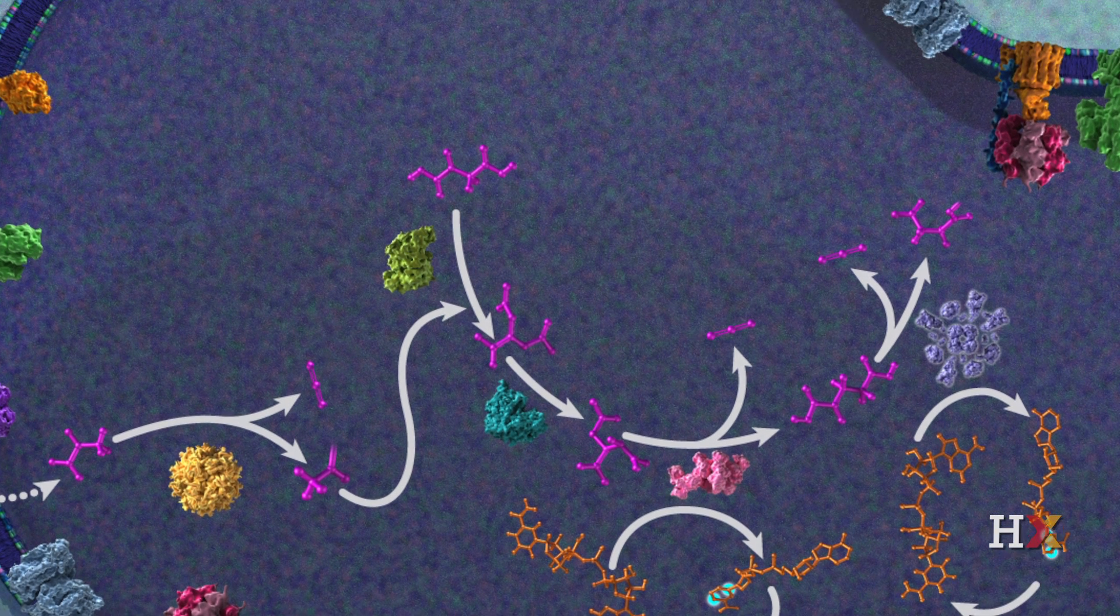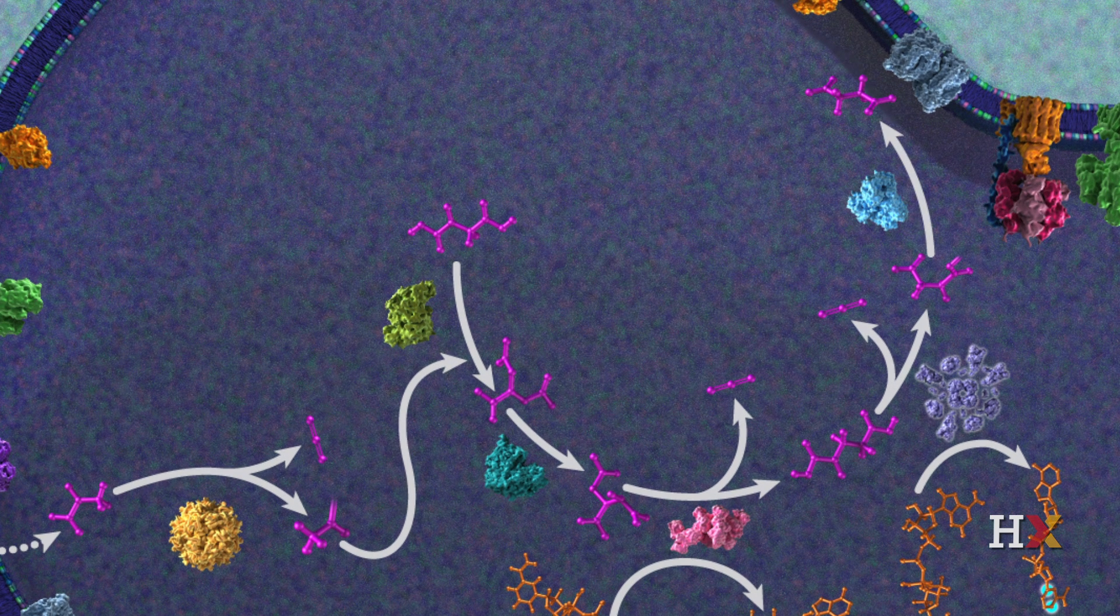In the fifth step, succinyl coenzyme A is converted into succinate by succinyl CoA synthetase, releasing coenzyme A. This reaction also produces one molecule of GTP, another high-energy molecule, which is omitted from this diagram for clarity.